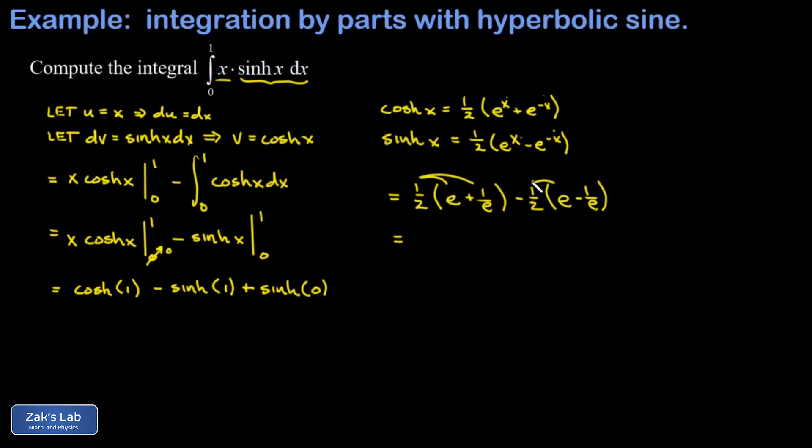Now I start cleaning things up. And when I distribute the one half to each term for each of these, I end up with a one half e minus one half e. So those terms are gone. And I end up with a 1 over 2e plus another 1 over 2e. And this gives me a grand total of 1 over e. And we're done.